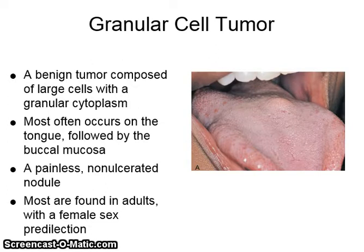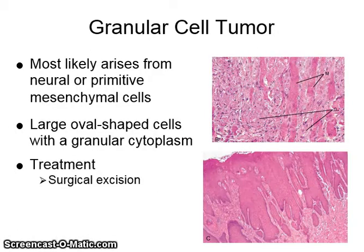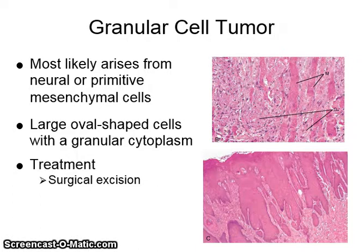Granular cell tumor is a benign tumor composed of large cells with a granular cytoplasm, most often occurring on the tongue and then in the buccal mucosa. A painless, non-ulcerated nodule is seen. Most are found in adults with a female sex predilection. They most likely arise from neural or primitive mesenchymal cells. They show large oval-shaped cells with granular cytoplasm and are treated with surgical excision.